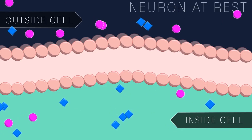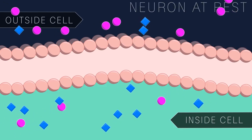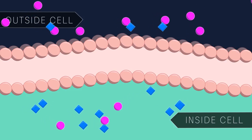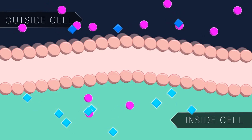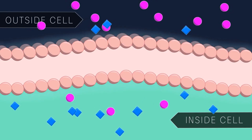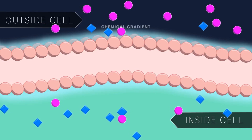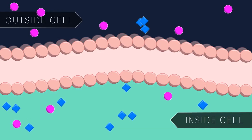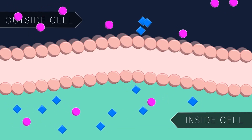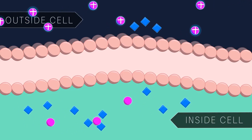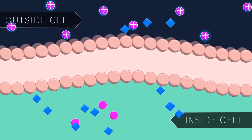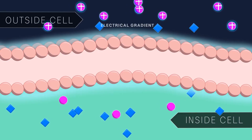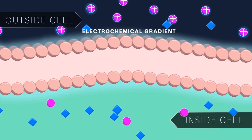When a neuron is not sending a signal, it is considered to be at rest. In a typical neuron in its resting state, the concentration of sodium ions is higher outside the cell than inside. The relative concentration of potassium ions is the opposite, with more ions inside the cell than outside. This ionic separation occurs right at the cell membrane and creates a chemical gradient across the membrane. Because ions are charged particles, we also need to consider their charge when thinking about their distribution across the membrane. At rest, there are more positively charged ions outside the cell relative to the inside. This creates a difference in charge across the membrane, called an electrical gradient. Together with the chemical gradient, we refer to this ionic imbalance as the electrochemical gradient.